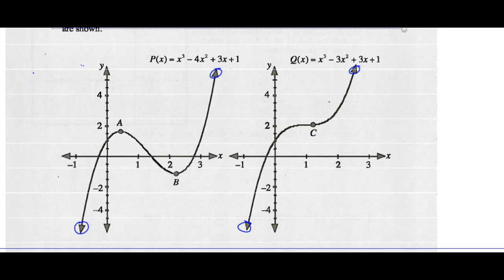The graph of p(x) has two turning points. We call point A a maximum turning point — a relative max. At point B, we call this a relative min. Note that points A and B do not consist of the absolute maximum or absolute minimum values. A looks like it's a maximum in this area, but the graph goes forever up, so it's not the absolute maximum. At point B, it's a relative minimum because the graph goes down forever, so it's not the absolute minimum.